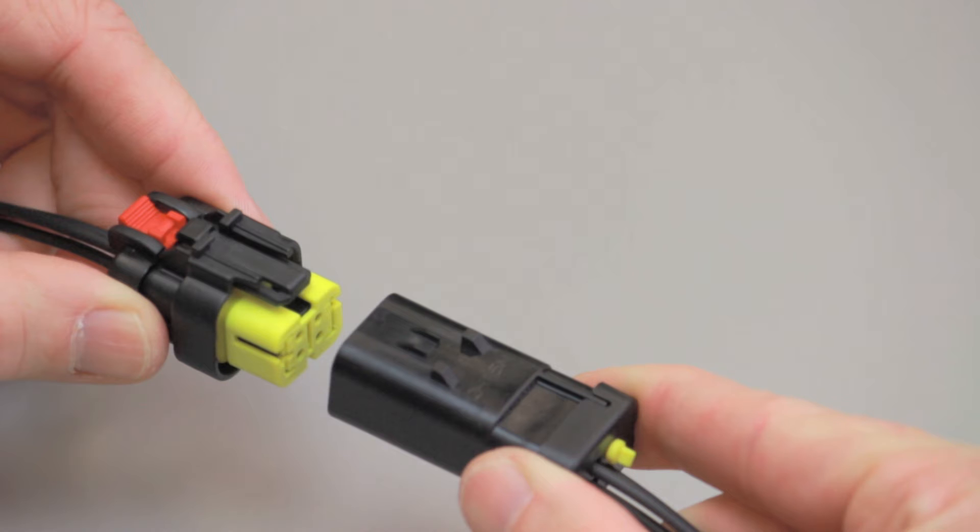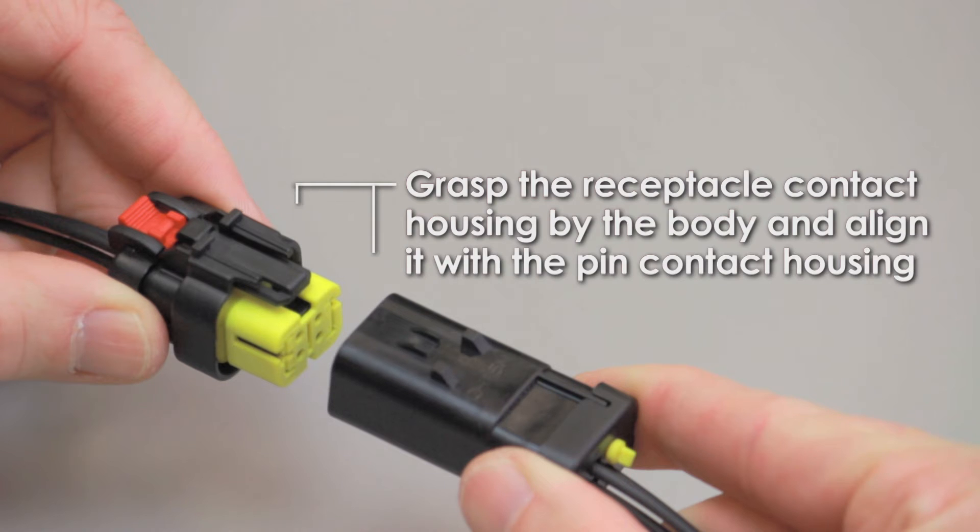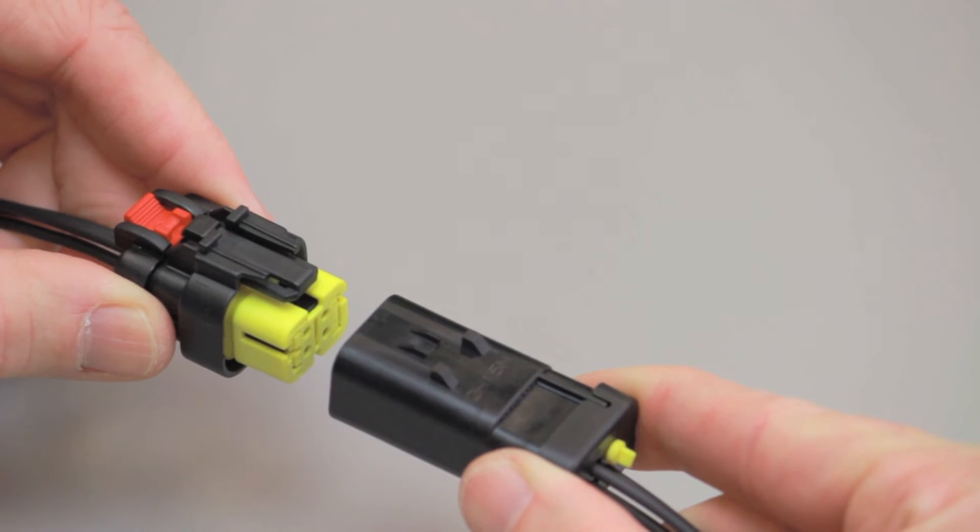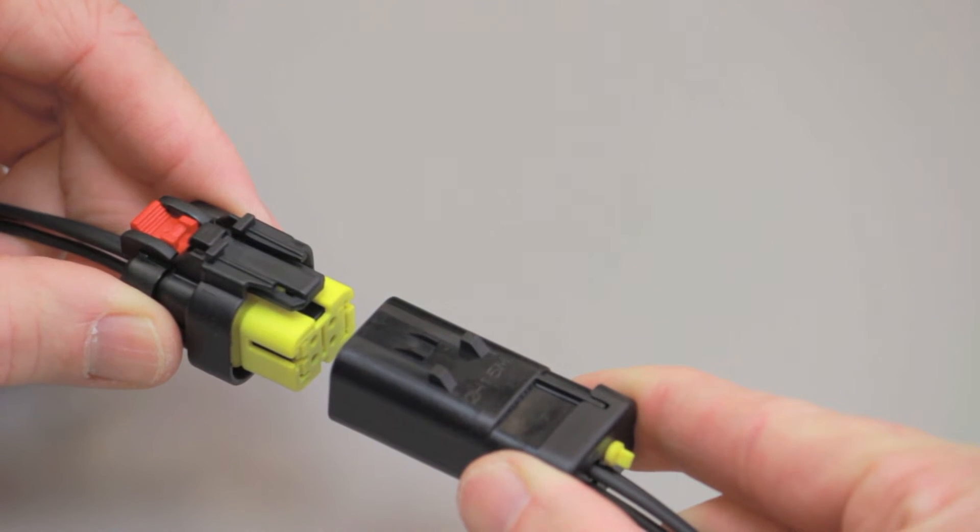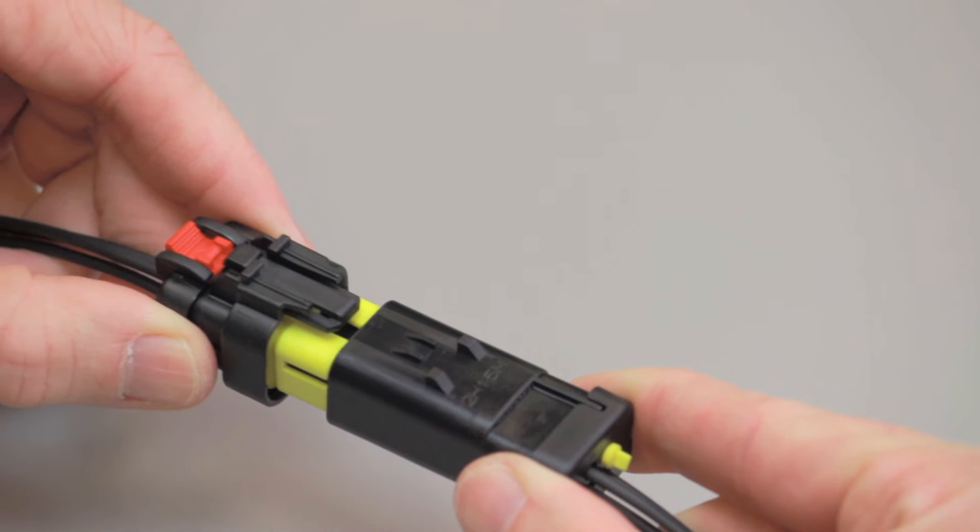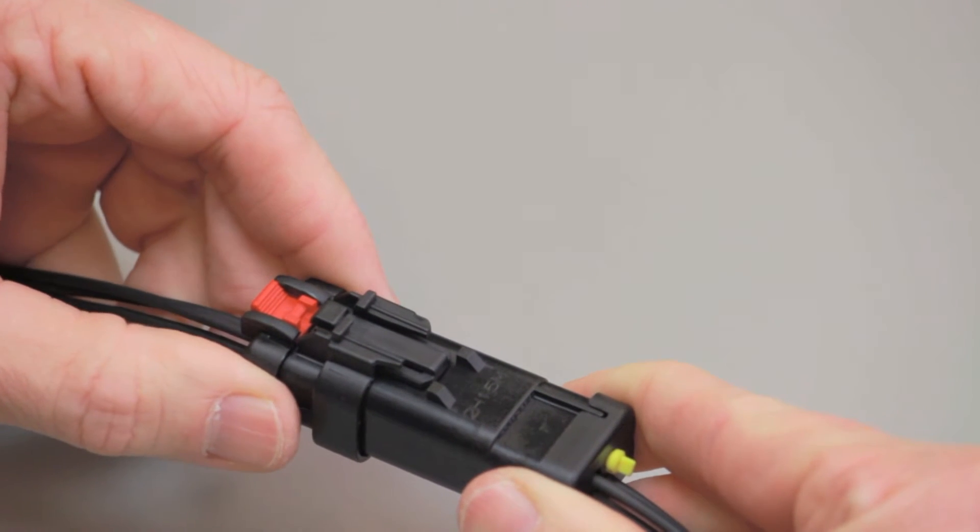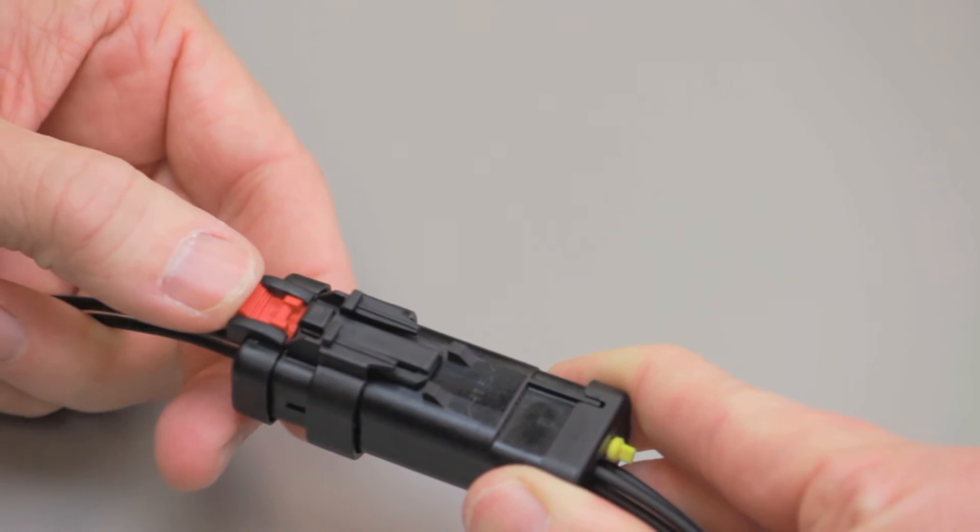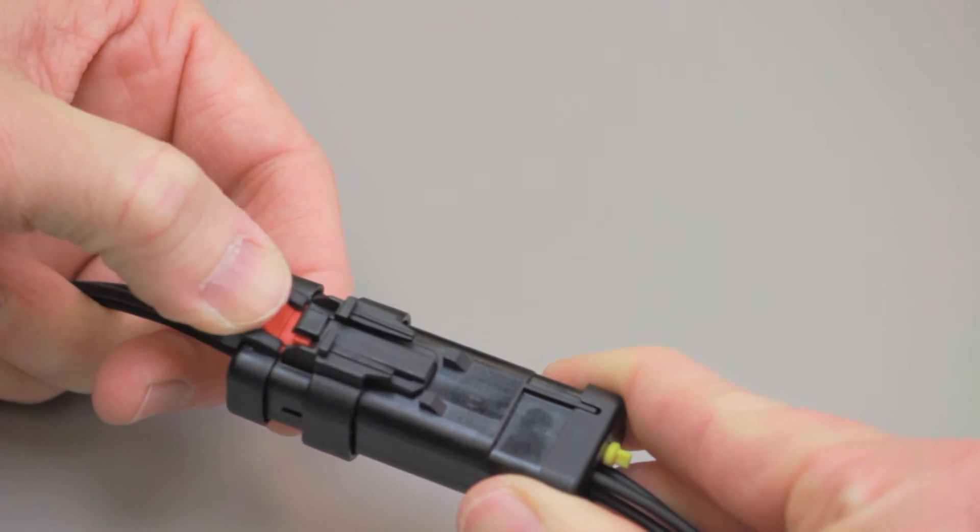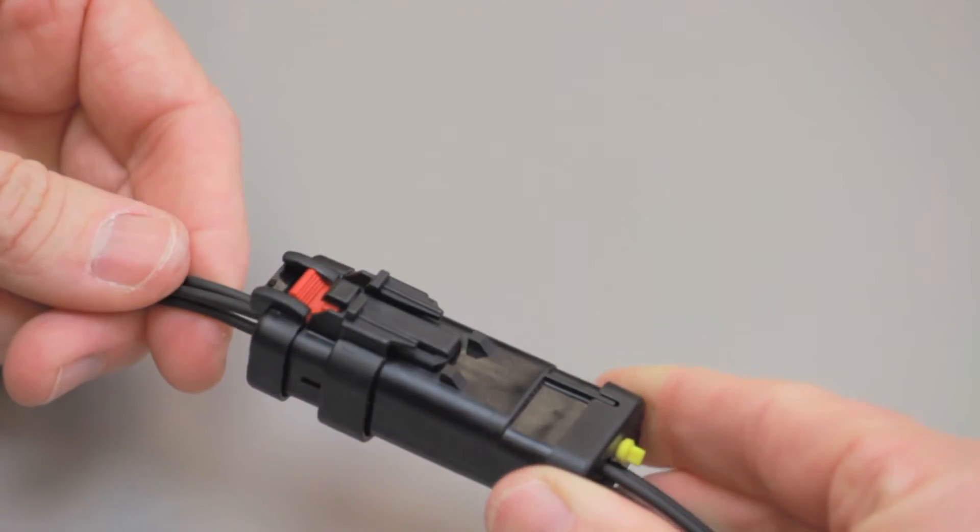When mating AmpSeal 16 connectors, grasp the receptacle contact housing by the body and align it with the pin contact housing. Push the receptacle contact housing and pin contact housing together until you hear and feel a click. Push the connector position assurance into the locked position until you hear and feel a click.